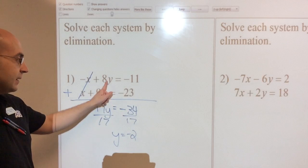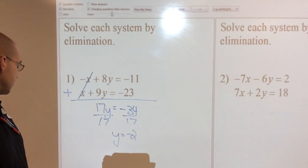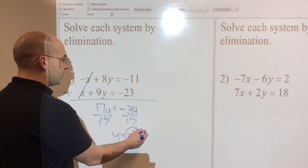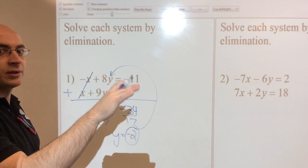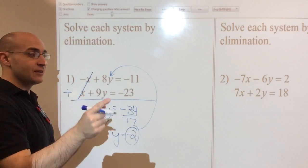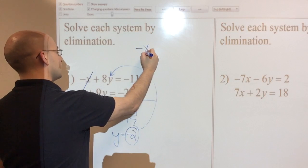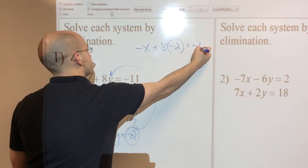Now I have to plug that negative 2 back in to one of my original y values so I can solve for x. So it doesn't matter which one. You may like one more than the other. Sometimes it's really simple. You're like, ooh, I definitely want to plug into that one because it's way easier than the other equation because there's a lot going on. So if I put negative 2 in there, I'm left with this. Negative x plus 8 times negative 2 equals negative 11.